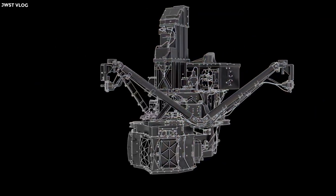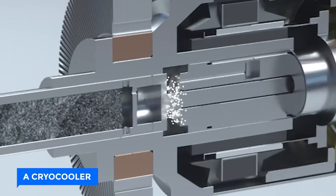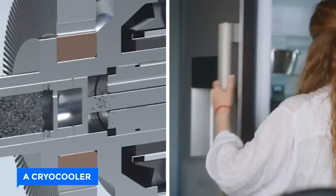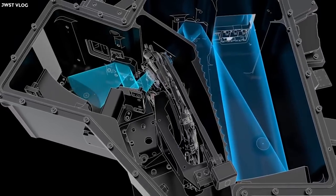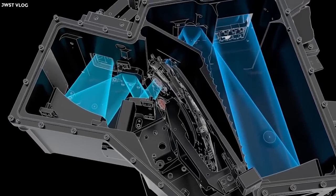MIRI's hurdle is staying cool, needed for accurate readings. A cryo-cooler, like an advanced fridge, keeps MIRI chilled at minus 266.5 degrees Celsius, allowing precise observations.